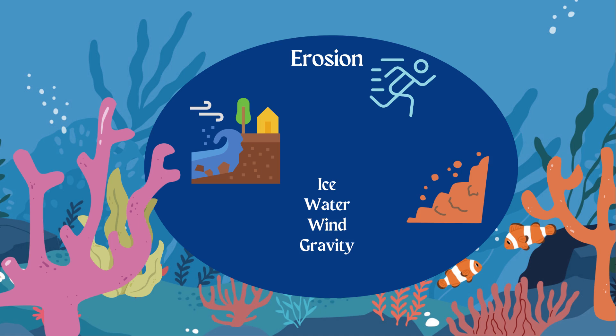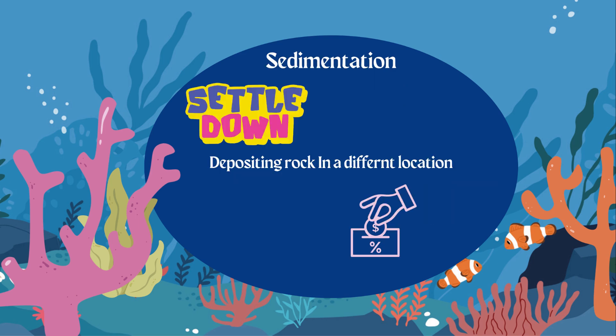And then finally, gravity. Gravity erosion is when we have large pieces of rock falling from one place down to another. So if there is an avalanche, that's an example of gravity erosion.